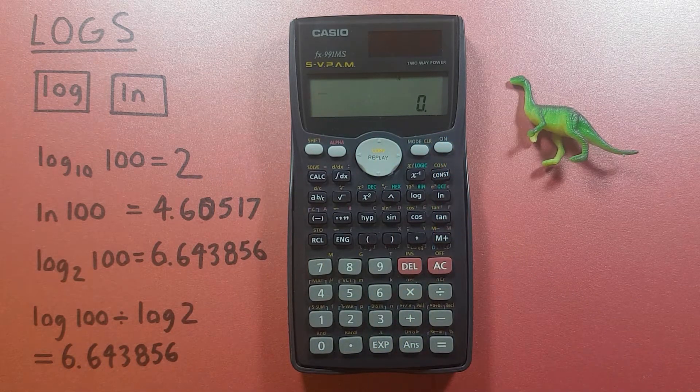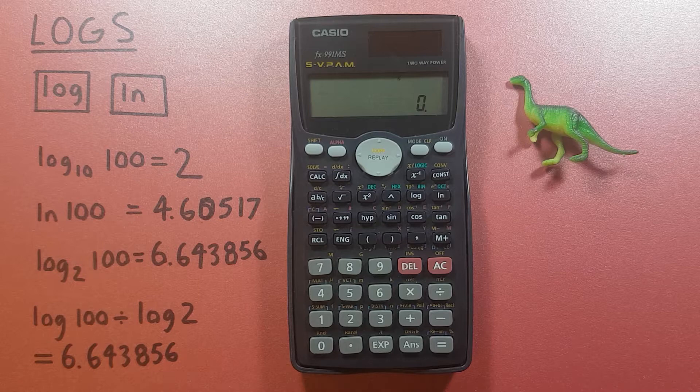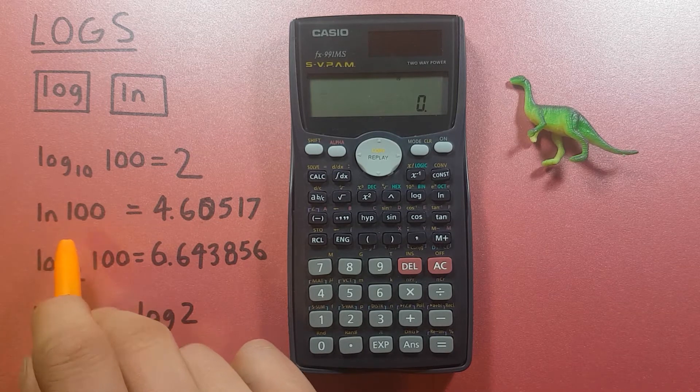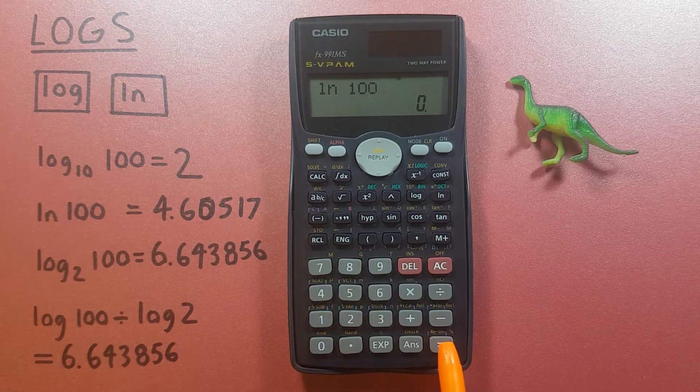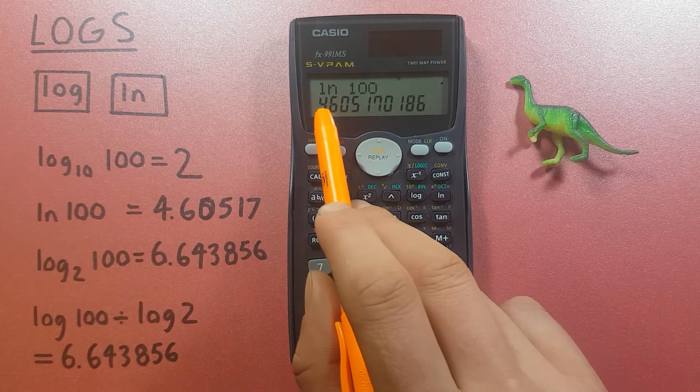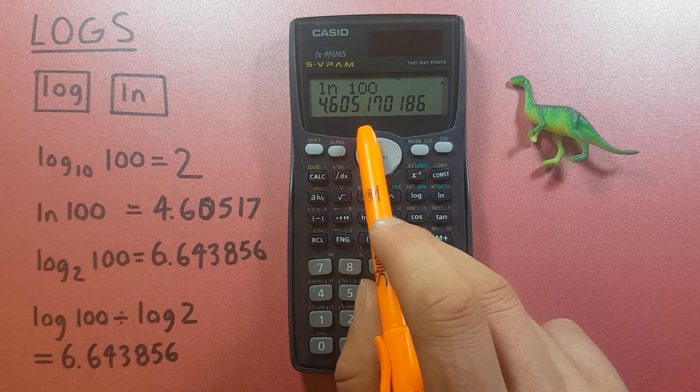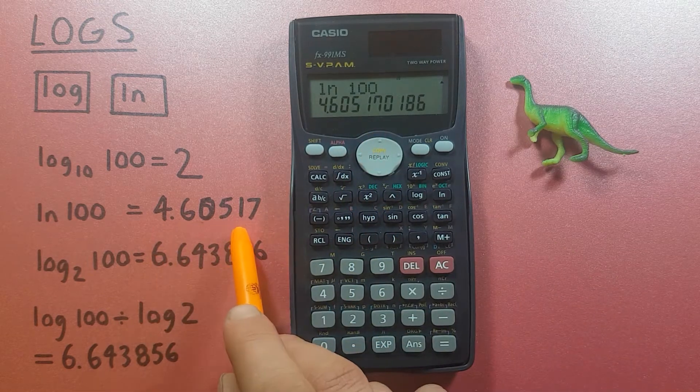The same thing applies with the natural log or LN, so if you want to find the natural log of 100 you simply press the LN and then 100 and press equals and we get 4.60517 etc, which is the correct answer.